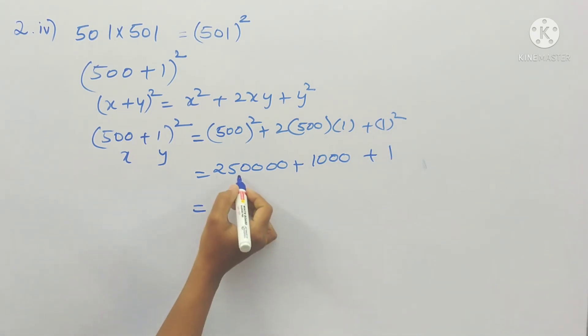So here 2 lakh 50,000 plus 1000: 2 lakh 51,000 plus 1. So 2 lakh 51,001 is the answer.